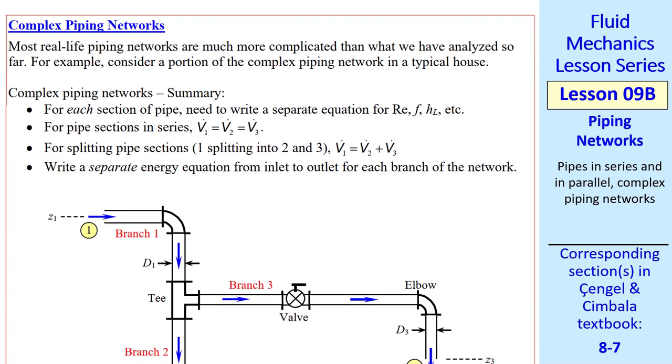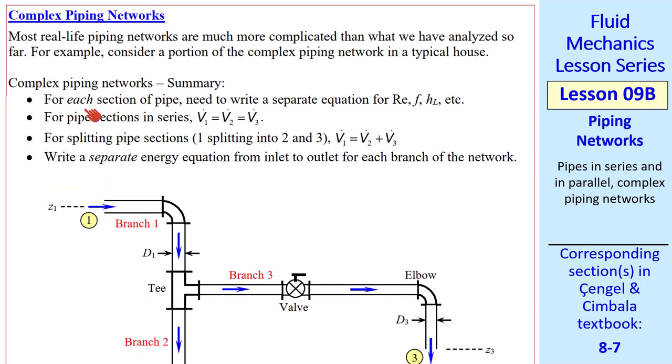Now consider a more complex pipe network. I'll give you a quick summary first, and then we'll look at an example. For each section of pipe, we need to write a separate equation for Reynolds number, Darcy friction factor, HL, which we call HL total, the sum of the minor and major losses.